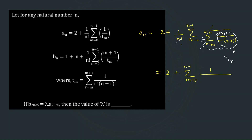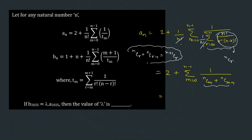If we open up this summation it becomes nCm plus nCm+1. We need to simplify this series further using the standard formula: nCr + nCr−1 = (n+1)Cr. Applying this here gives (n+1)Cm+1, so the series becomes 2 plus summation m equal to 0 to n−1 of 1 over (n+1)Cm+1.